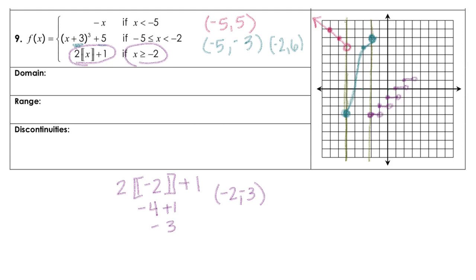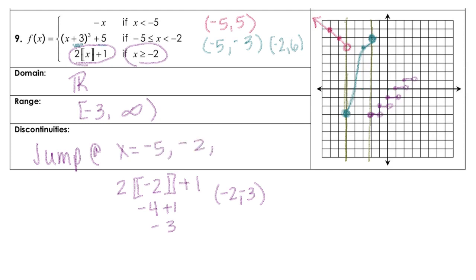That function would continue all the way through. So for the domain, that is going to be all real numbers. The range — the lowest point I see is negative 3 — so that goes from negative 3 all the way up through infinity. Our discontinuities are jumps at x equals negative 5, negative 2, and negative 1, and really every integer after that — so we just put dot, dot, dot for that one.